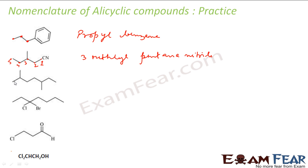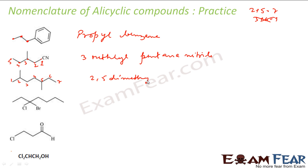The longest chain is seven carbons. We can name in this fashion — one, two, three, four, five, six, seven — giving substituents at positions two and five, which sums to seven. The other fashion gives positions three and six, summing to nine, so we take the first. At positions two and five we have methyl groups: this is 2,5-dimethylheptane.